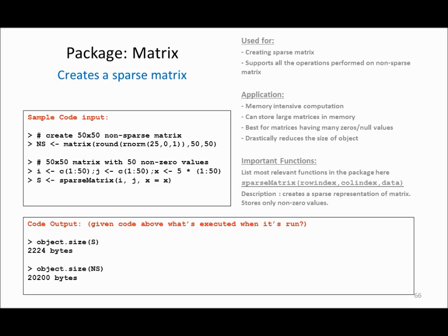Another useful package is called Matrix, which is used to create a sparse matrix. A sparse matrix is used when you have a lot of null values or zeros in your data. A real-world example is social network analysis — connections between people who know each other are represented by 1, and unknown connections by 0. Using sparse matrix representation saves a lot of memory. In this example, comparing two 50×50 matrices, the sparse matrix takes only 2,000 bytes whereas the non-sparse matrix takes 20,000 bytes.